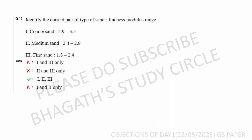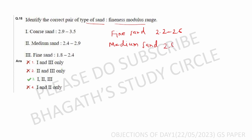Identify the correct pair of type of sand and fineness modulus. Fine sand: 2.2 to 2.6. Medium sand: 2.6 to 2.9. Coarse sand: 2.9 to 3.2. Okay.